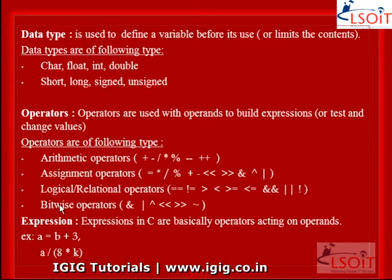Bitwise operators work on bits and perform bit-by-bit operations. Bitwise operators are as follows: AND operator, OR bitwise operator, XOR bitwise operator, binary left shift operator, binary right shift operator, and negation — also called one's complement.